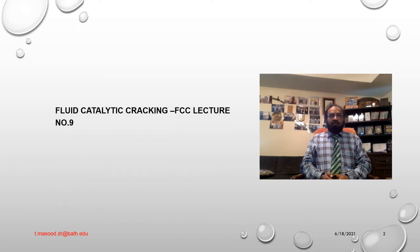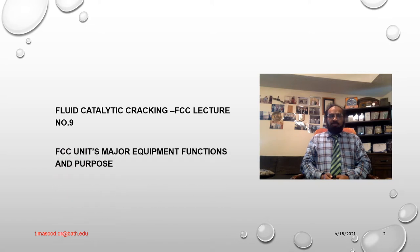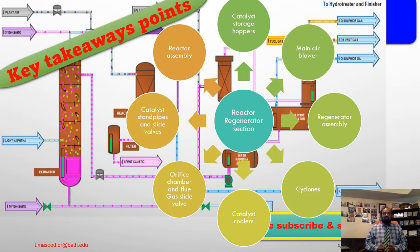FCC unit lecture number nine — major equipment, function and purposes. Key takeaway points from lecture number nine: cyclones, catalyst cooler, orifice chamber, catalyst standpipe and slide valves, reactor assembly, main column section.